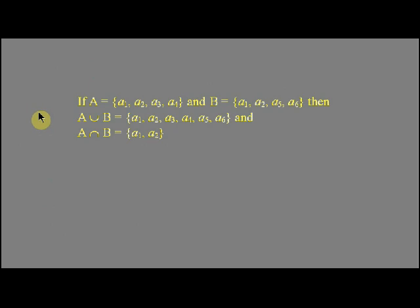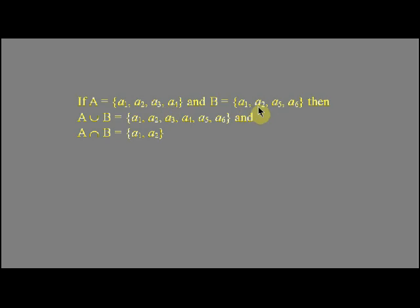For example, if A is the set comprising A1, A2, A3, and A4, and B is the set comprising A1, A2, A5, and A6, then A union B is the set of all things which are either in A or in B or both — that is, A1, A2, A3, A4, A5, and A6, since A1 and A2 occur in both sets but we don't write them twice. And A intersect B is the set of all things in both, which by scanning the members we see is just A1 and A2.